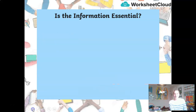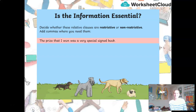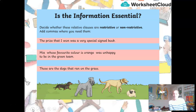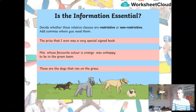See if you can do the same with these ones: 'The prize that I won was a very special signed book.' 'Mia, whose favourite colour is orange, was unhappy to be in the green team.' 'Those are the dogs that ran on the grass.' Do those sentences require commas because their relative clause is a restrictive one? Have a little go and see if you can figure it out.